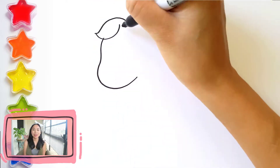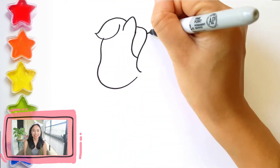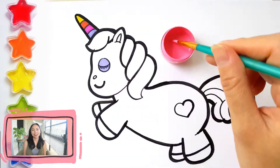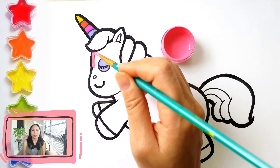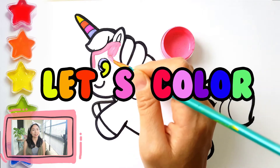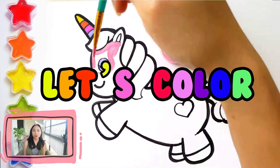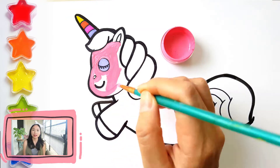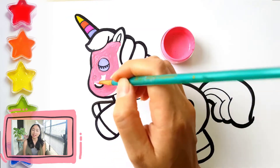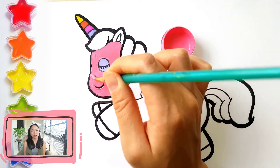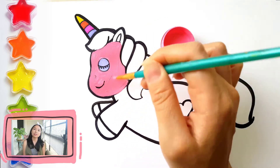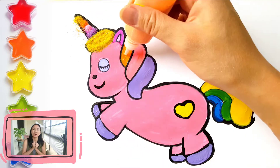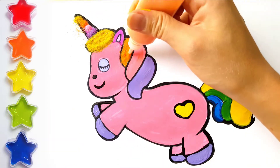Hi kids, it's V. Today we are going to see a cutie friend — it's a unicorn! A unicorn can be any color, and anyone who touches it will find happiness and joy. Why don't we greet our unicorn by drawing? Let's jump to it!